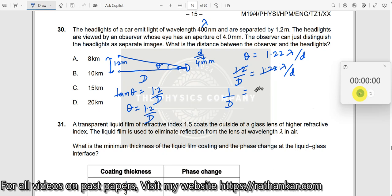1.22 gone here. Lambda. What is lambda here? 400 into 10 to the power of minus 9 divided by small d. What is small d? 4 into 10 to the power of minus 3. So, 4 ones are and this is 100 into the power of minus 9 should be 10 to the power of minus 7 divided by 10 to the power of minus 3. So, which should now be equal to 10 to the power of minus 4.